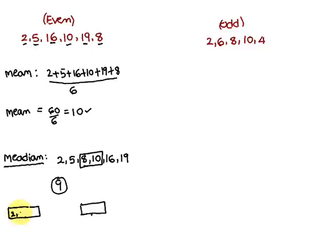The numbers 2, 5, 8 lie to the left side of the median, and the numbers 10, 16, 19 lie to the right side of the median 9. Since there are three numbers on each side, 9 is the median of the given numbers. The median is the midpoint where equal counts of numbers lie on both sides.